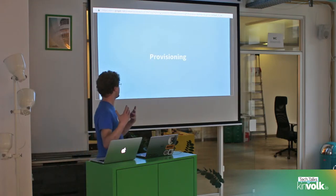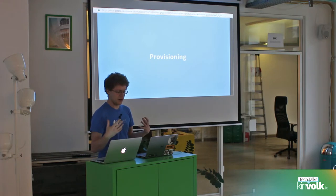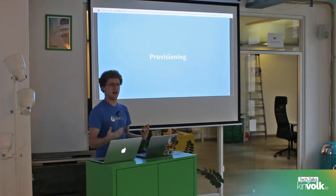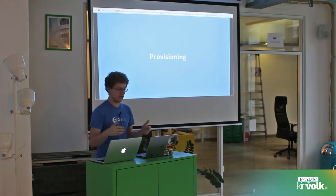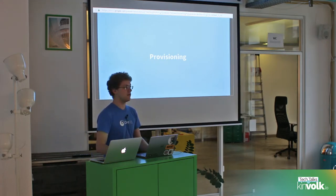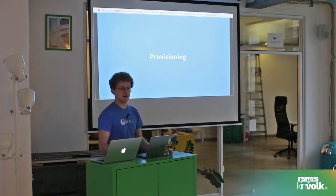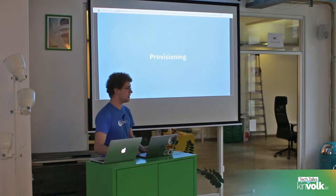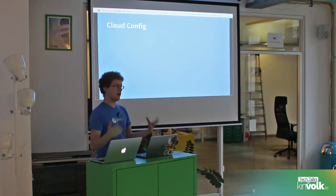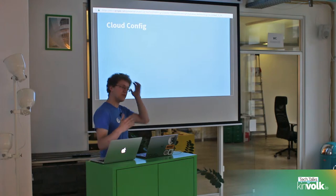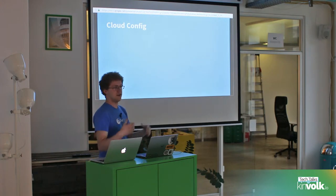Jumping into it — let's talk about provisioning. Our ideal is that when a Container Linux machine comes online for the first time, when it first boots and is created, it'll receive a configuration file telling it what it is and what it does: here are the systemd units you're supposed to run, this is how you configure your network, these are the users you should have. And for a long time, the way we've done this is via cloud configs.